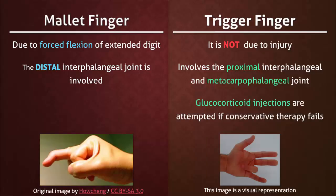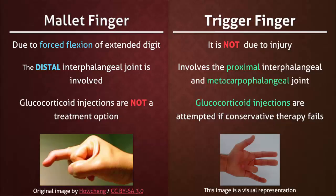Surgery is the last option for trigger finger, and it may even be treated with glucocorticoid injections if conservative therapy fails. Mallet finger is treated either conservatively or with surgery, but not with glucocorticoid injections.